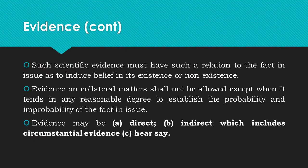We also have collateral matter, meaning these evidences shall not be allowed except when they follow a certain reasonable degree — meaning the degree is acceptable by the conditions prescribed by the court. Remember, you have to establish the probability and improbability of the fact. Is your evidence probable enough to claim or solve a case? If yes, then the evidence should be accepted. If improbable — too far from the case being solved — it will not be accepted as evidence.